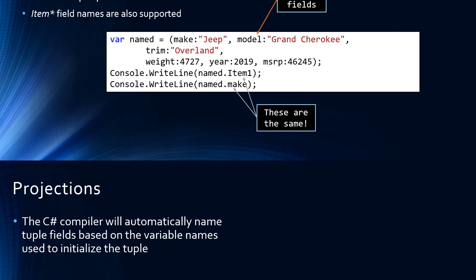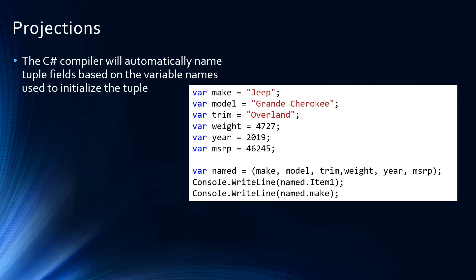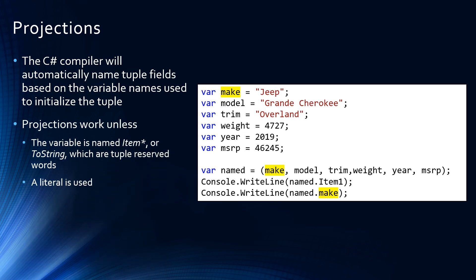As of C Sharp version 7, we can also do what are called projections. The compiler will automatically name tuple fields based on the variable names used to initialize the tuple. So in this example, the name of the variable containing the value 'jeep' is in a variable called make. When we initialize the tuple with the variables, those automatically become the field names of the tuple as well. The traditional item-star names are still available. Projections always work unless the variable that we're initializing has the format of item1, item2, etc., or toString — those are both reserved words in a tuple.